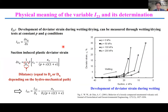I2-3 is the ratio of incremental deviatoric strain to incremental suction when q and p are constant. The value of I2-3 can be determined by carrying out wetting and drying tests to obtain ds — the identity number — through typical tests shown on the right-hand side. Once ds is obtained, I2-3 can be calculated from the equation shown at the bottom.